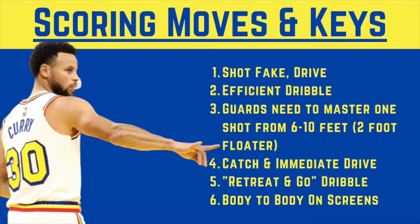Some scoring moves that all players need in their skill package: one, a shot fake drive. Two, an efficient dribble. Three, all guards need to master one shot from six to ten feet out — not a layup or finger roll, but maybe two big strides from the rim, like a floater or runner like Trey Young uses. Four and five, catch-and-immediate-drive, and a retreat-and-go dribble. And another key — going body to body on screens, which leads directly to scoring moves.